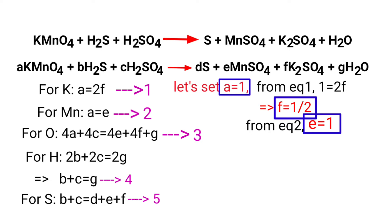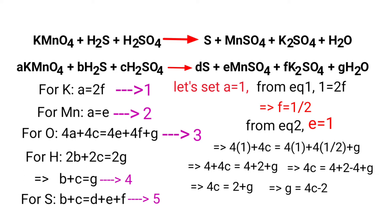Now apply the a, f, and e values in equation 3. Then 4 times 1 plus 4c equals 4 times 1 plus 4 times 1/2 plus g. Then 4 plus 4c equals 4 plus 2 plus g. Then 4c equals 4 plus 2 minus 4 plus g. Then 4c equals 2 plus g.